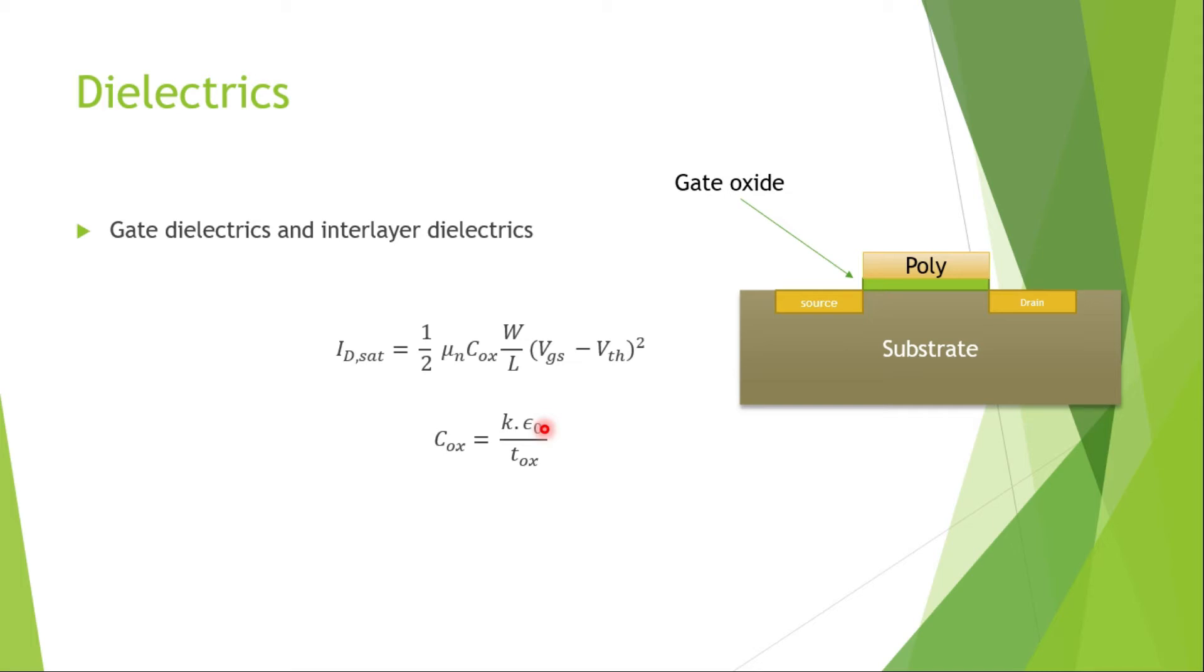But the problem is, below 20 angstrom, nowadays it has reached to 1 angstrom as well, but still, below 20 angstrom, the tunneling leakage through the gate becomes a serious problem.